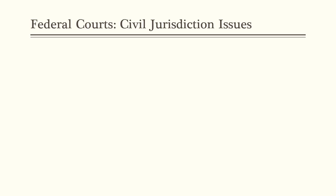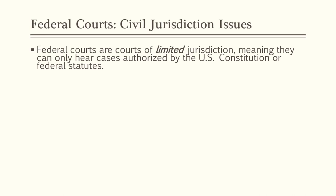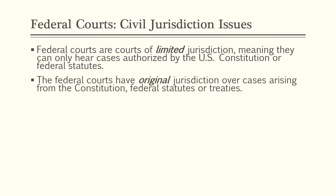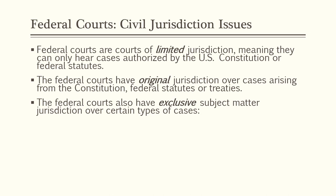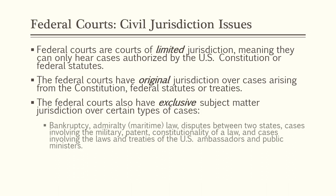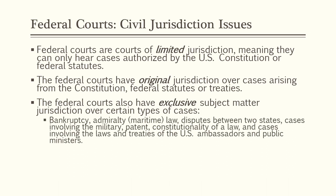Because we covered Chapter 3 in two parts, we did cover some jurisdictional issues for federal courts in Part 1, but let's do a quick refresher on federal courts and civil jurisdiction. Federal courts are courts of limited jurisdiction, meaning they can only hear cases authorized by the U.S. Constitution or federal statutes. The federal courts have original jurisdiction over cases arising from the Constitution, federal statutes, or treaties.